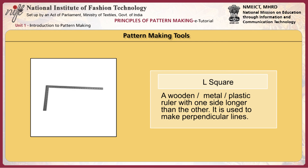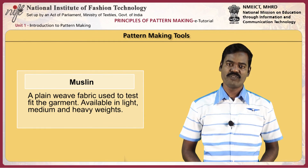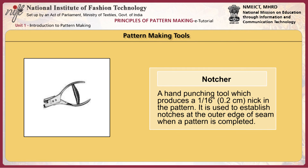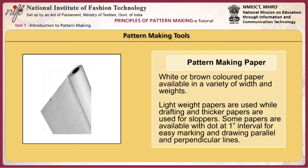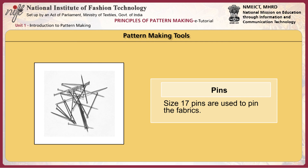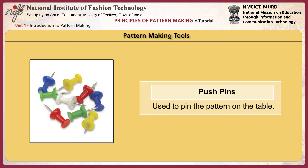The L-square is a wooden, metal, or plastic ruler with one side longer than the other, used to make perpendicular lines. Muslin is a plain weave fabric used to test the fit of a garment, available in light, medium, and heavy weights. The notcher is a hand punching tool which produces a 1/16-inch nick in the pattern, used to establish notches at the outer edge of the seam when the pattern is completed. White or brown pattern-making paper is available in a variety of widths and weights; lightweight papers are used while drafting and thicker papers for slopers. Some papers are available with dots at 1-inch intervals for easy marking and drawing parallel and perpendicular lines. Mechanical pencils are used to draw patterns, normally with a 4H lead. Size 17 pins are used to pin fabrics, and push pins are used to pin patterns on tables.